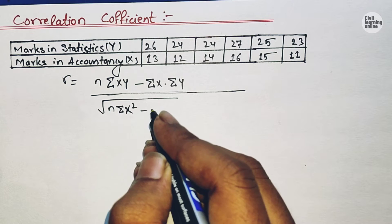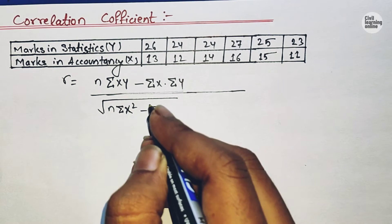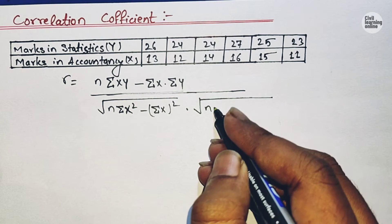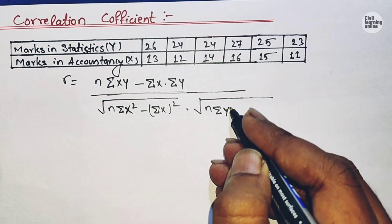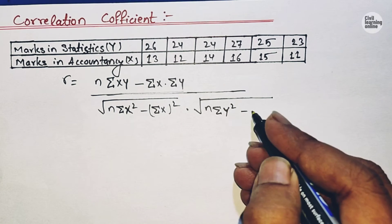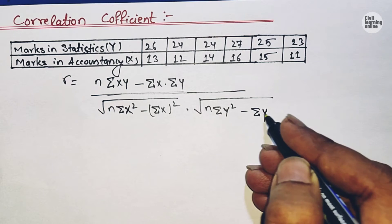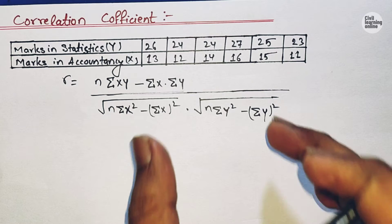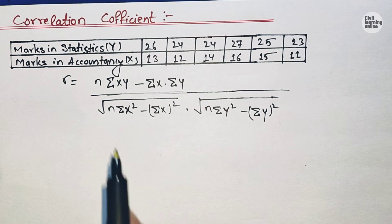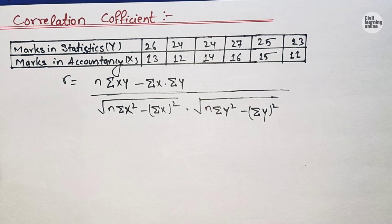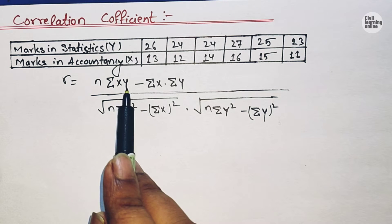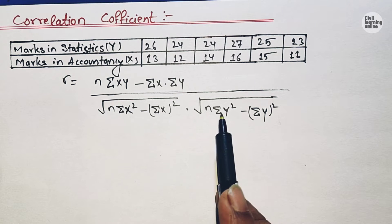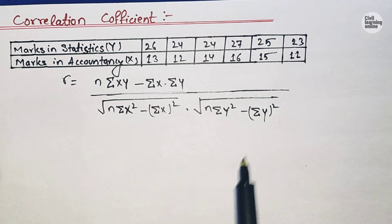That quantity is multiplied by the square root of n times summation Y square minus summation Y whole square. Using this formula we are going to solve this numerical. The formula tells us we need to calculate summation XY, summation X, summation Y, summation X square, summation X whole square, summation Y square, and summation Y whole square.